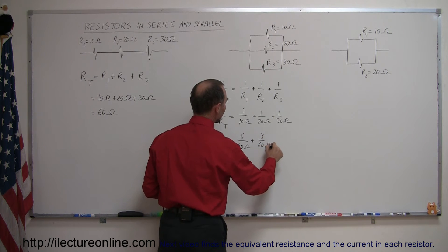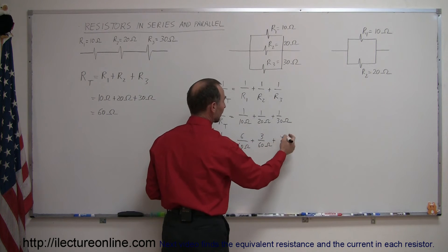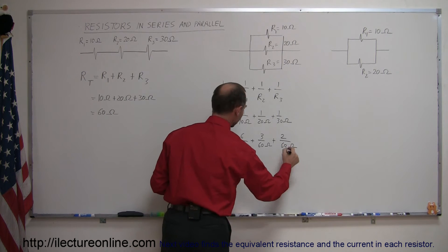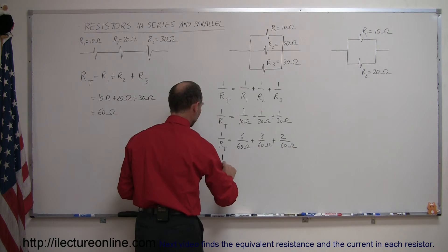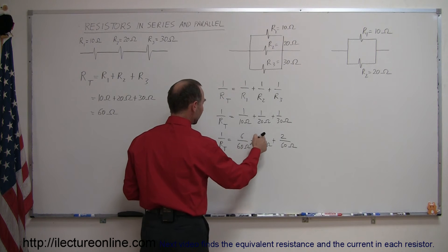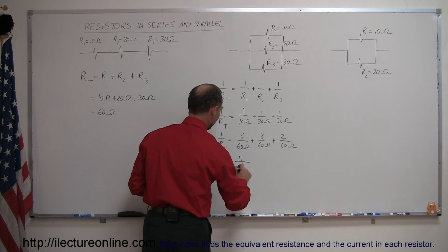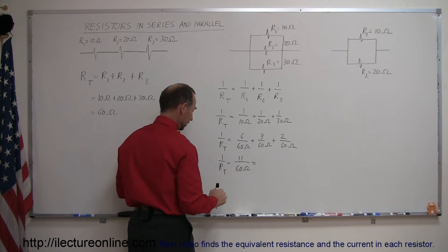Here we multiply the numerator and denominator by 3, so we get 3 over 60 ohms. And here we have to multiply the numerator and denominator by 2, we get 2 over 60 ohms. And so 1 over R total is equal to 6 plus 3 plus 2, which is 11 over 60 ohms.